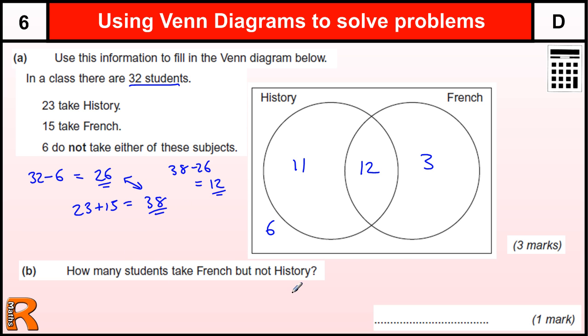How many students take French but not History? So which section is that? The French but not History is this section. OK, everything in there is the History and French. So French but not History is just those 3 for one bonus mark.